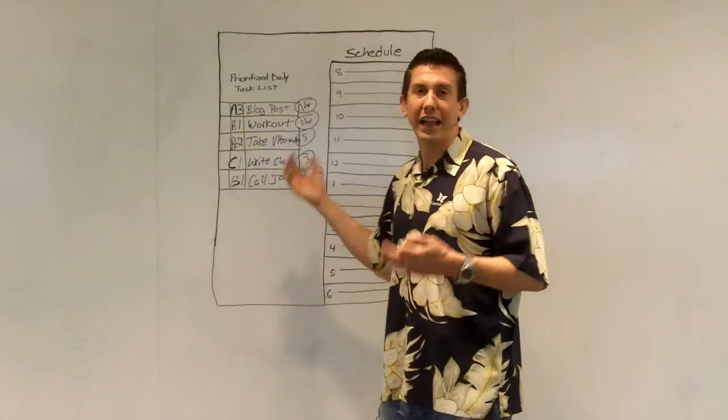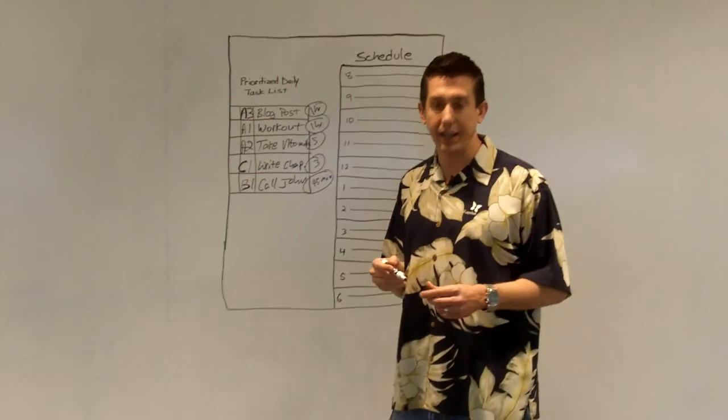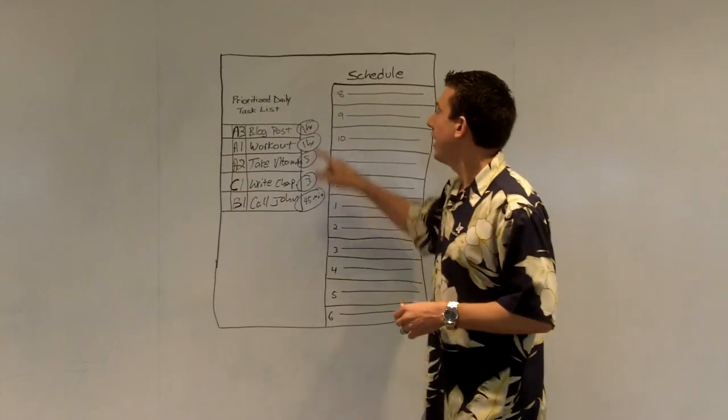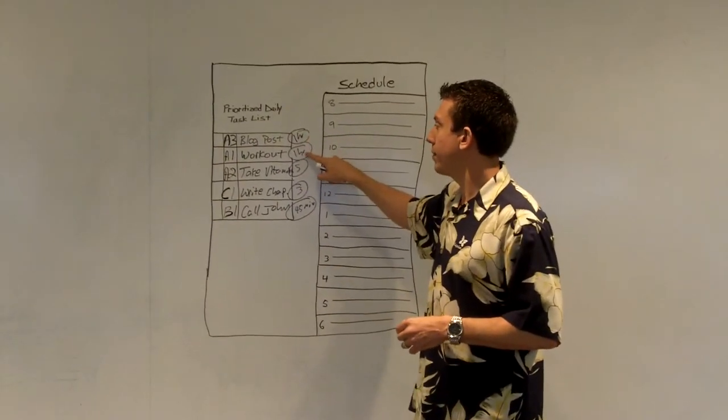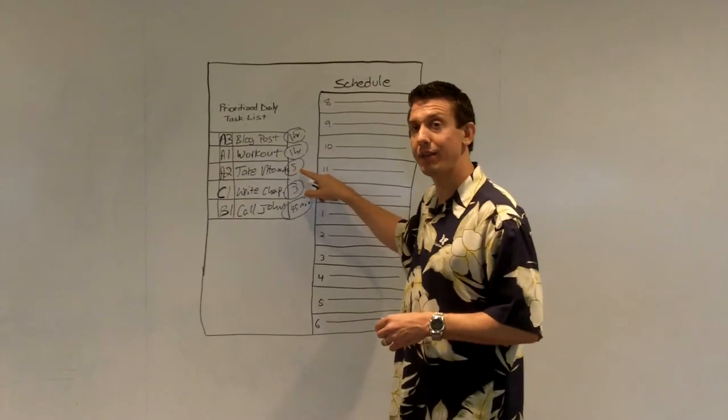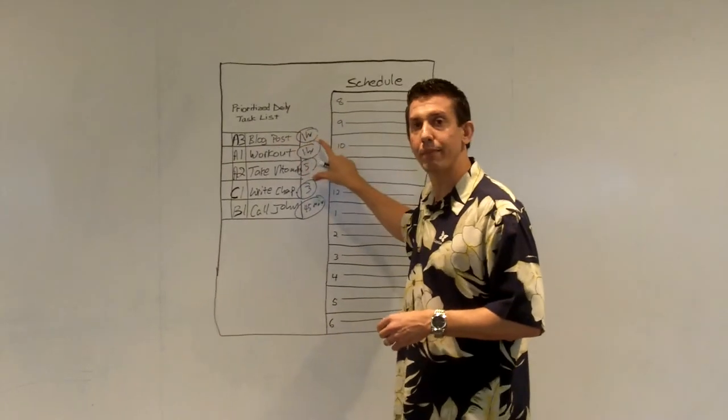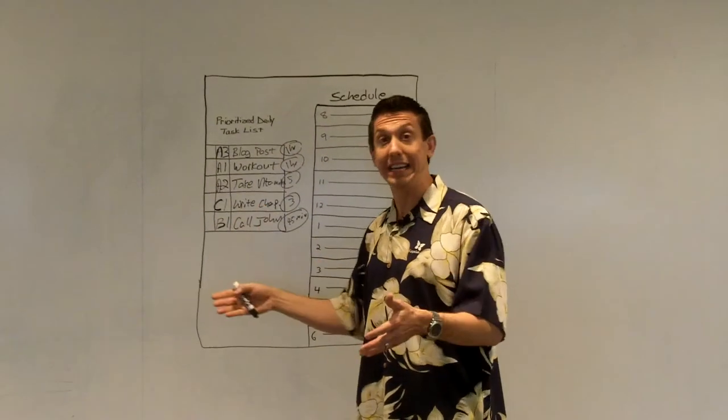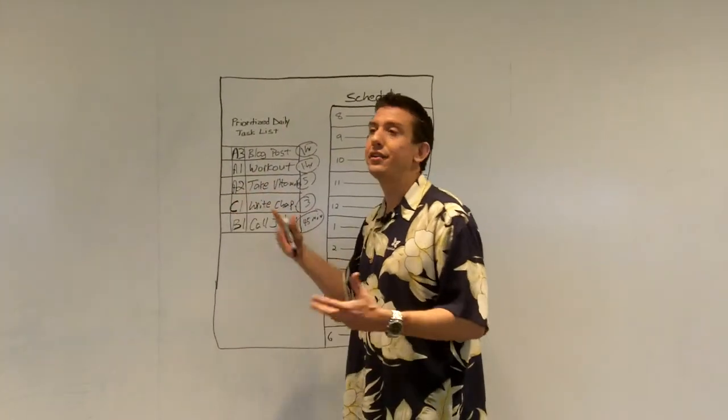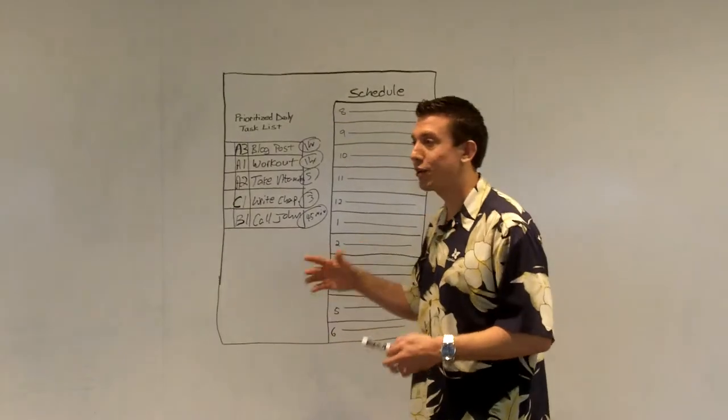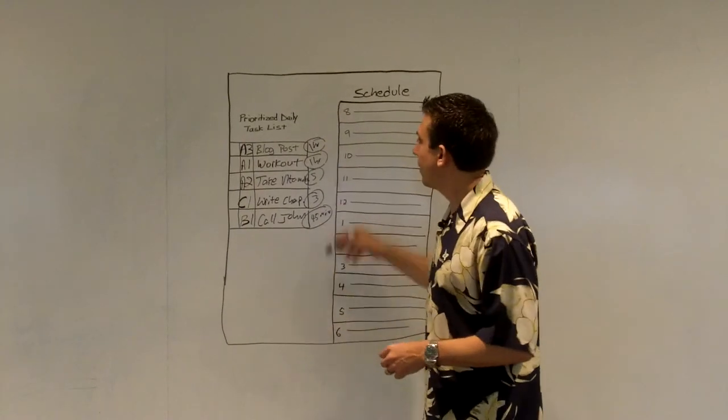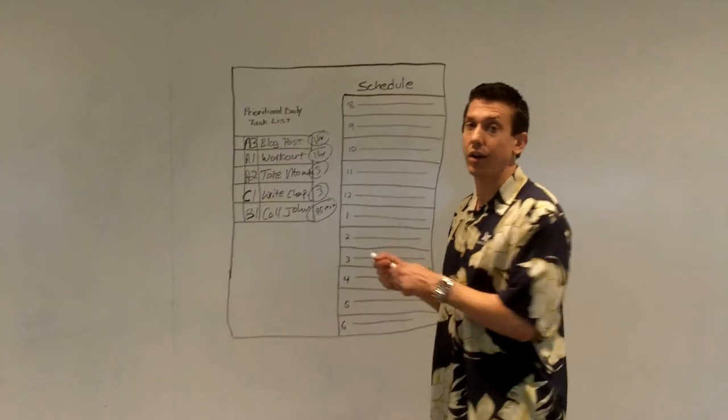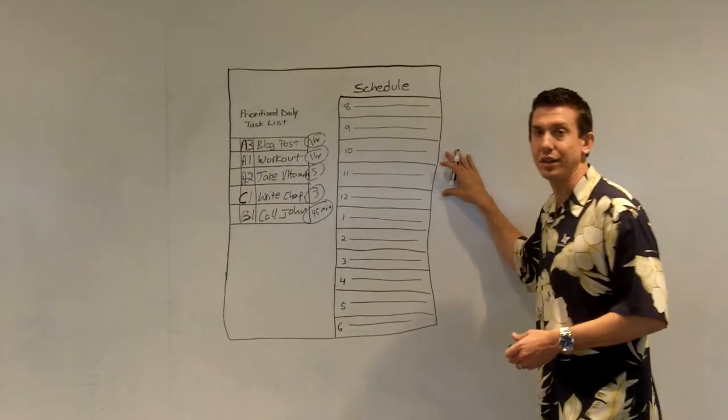So in this example, I can easily get all of these things done. The reason why I found it important to put the time that it's going to take me to achieve those is I mainly do those for the A priorities. Because if you look at your A's and you see that it's going to take you 15 hours to do all your A's, you're never going to get all your A's done. So you can kind of reprioritize.